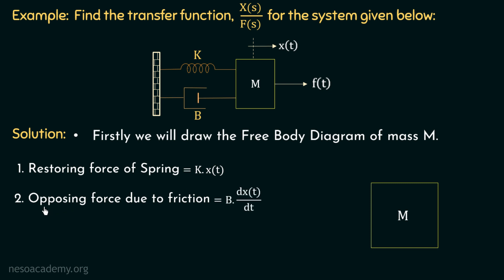Moving on to the second force, which is the opposing force due to friction. It will be equal to b multiplied with dx(t)/dt. The coefficient of friction is equal to b, and the displacement is equal to x(t). So the velocity of this system to the right hand side will be dx(t)/dt, and that's why the opposing force due to friction is equal to b multiplied with dx(t)/dt.